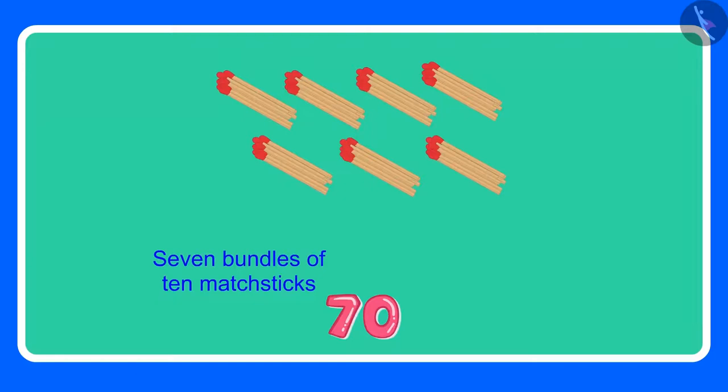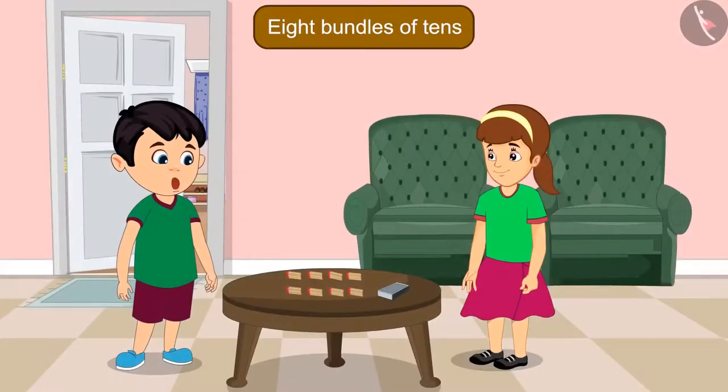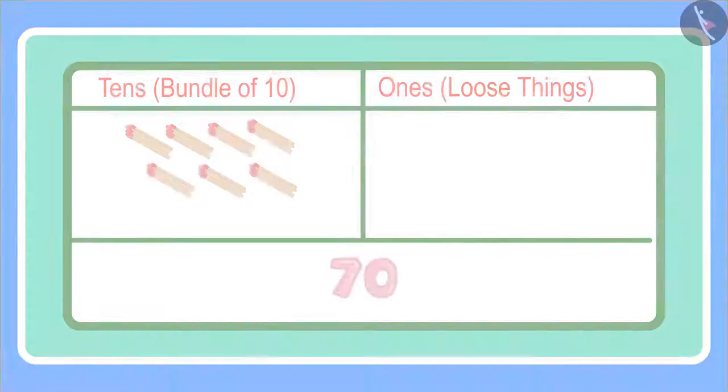Arti, for 70 we needed seven bundles, and 70 has a zero also, which means 10 more matchsticks. Therefore, I have made eight bundles of 10 matchsticks. You are not doing this correctly, Chotu. Wait, let me explain. 70 has seven tens and zero ones.